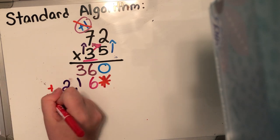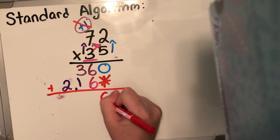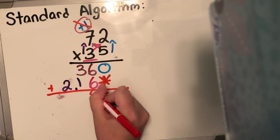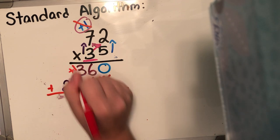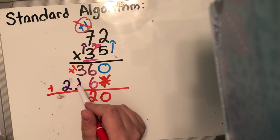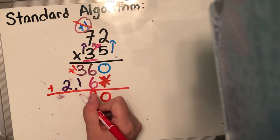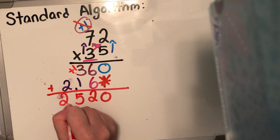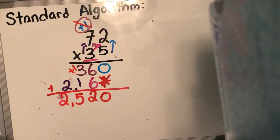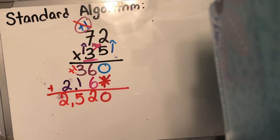Now I get to add everybody together. Zero plus zero is zero. Six plus six is 12 — carry that one. Three plus one is four, plus an additional one is five. And two comes down by himself. So 72 times 35 is gonna give me a product of 2,520. Watch the video a couple of times if you need a reminder, please reach out to me. But until the next video guys, I'll see you later. Bye.